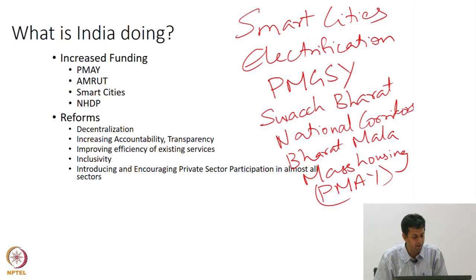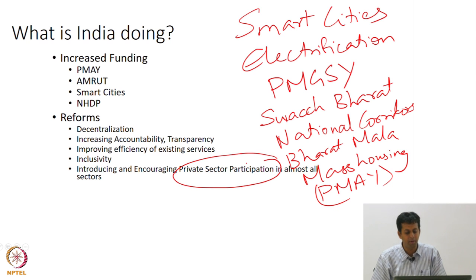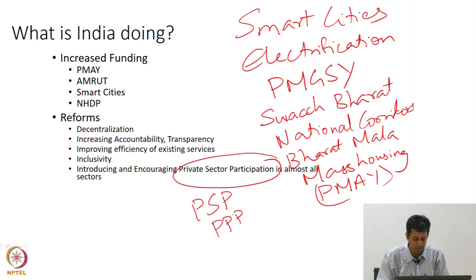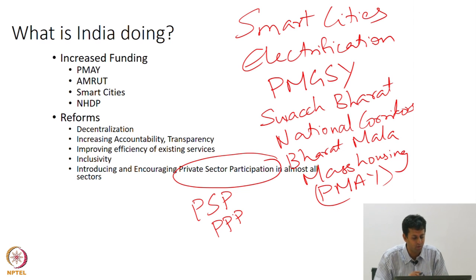What the government of India is trying to do is set the rules of the game, give some funding, and let various organizations — could be National Highways, could be Corporation of Chennai, could be the Public Works Department — leverage and build infrastructure. One thing we will come to repeatedly in this class is private sector participation, PSP — some people call it PPP, public-private partnerships.